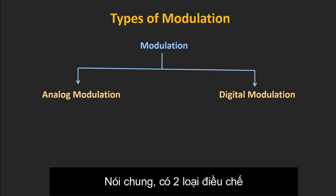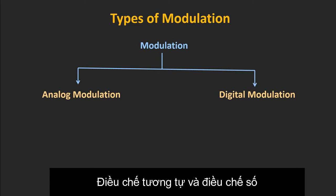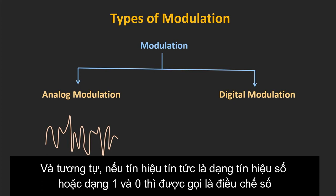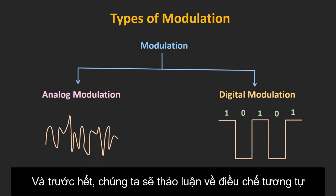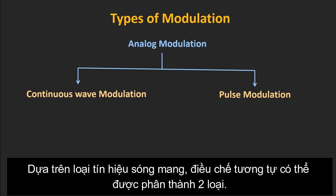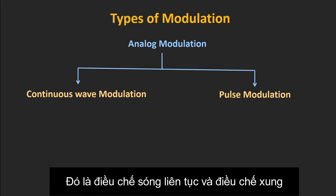Broadly, there are two types of modulation: analog modulation and digital modulation. If the message signal is analog, it is known as analog modulation. Similarly, if the message signal is in digital form — in terms of 1s and 0s — it is known as digital modulation. Based on the type of the carrier signal, analog modulation can be further classified into two categories: continuous wave modulation and pulse modulation.